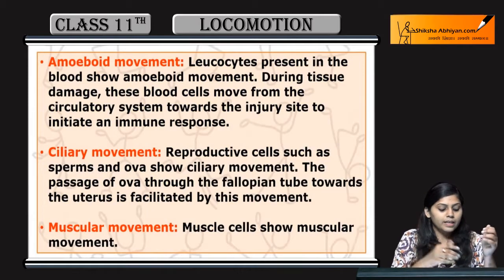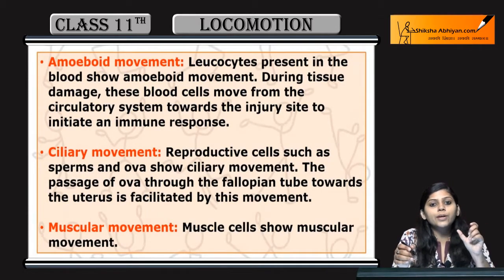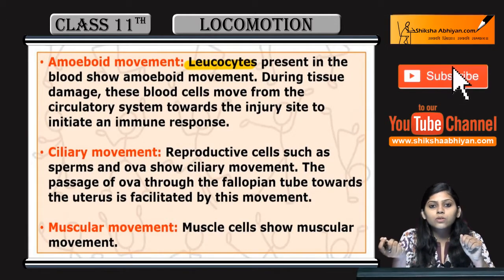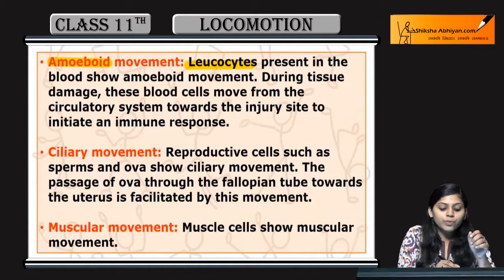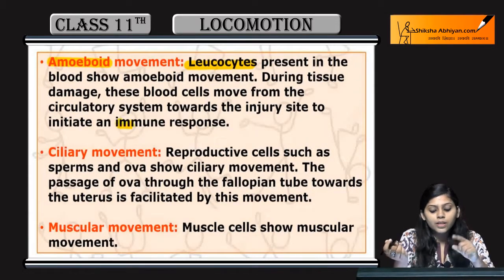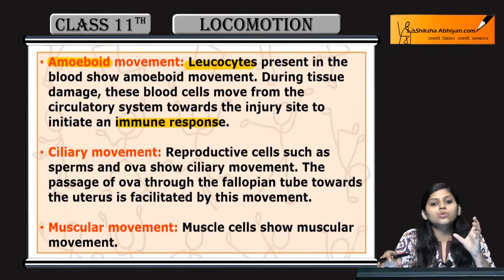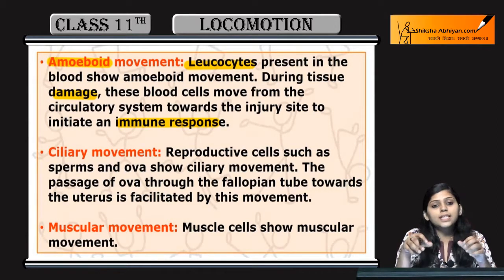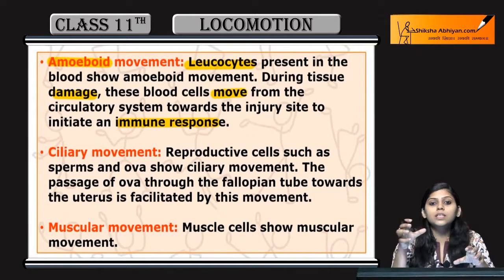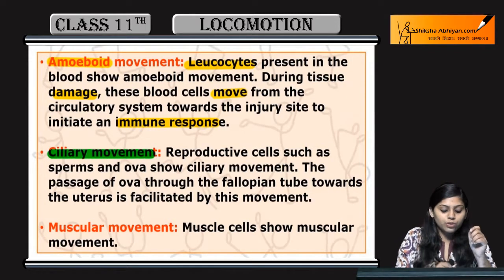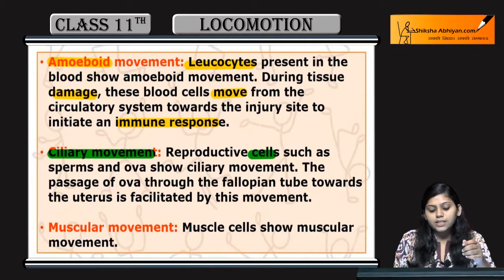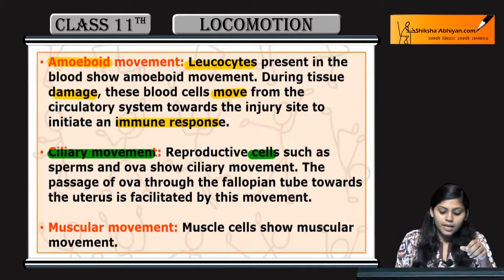Amoeboid movement is exhibited by leukocytes, which are the white blood cells present in the blood. The function of white blood cells is to generate an immune response. When tissue is damaged, the leukocytes move towards the injury site from the circulatory system to generate the immune response.